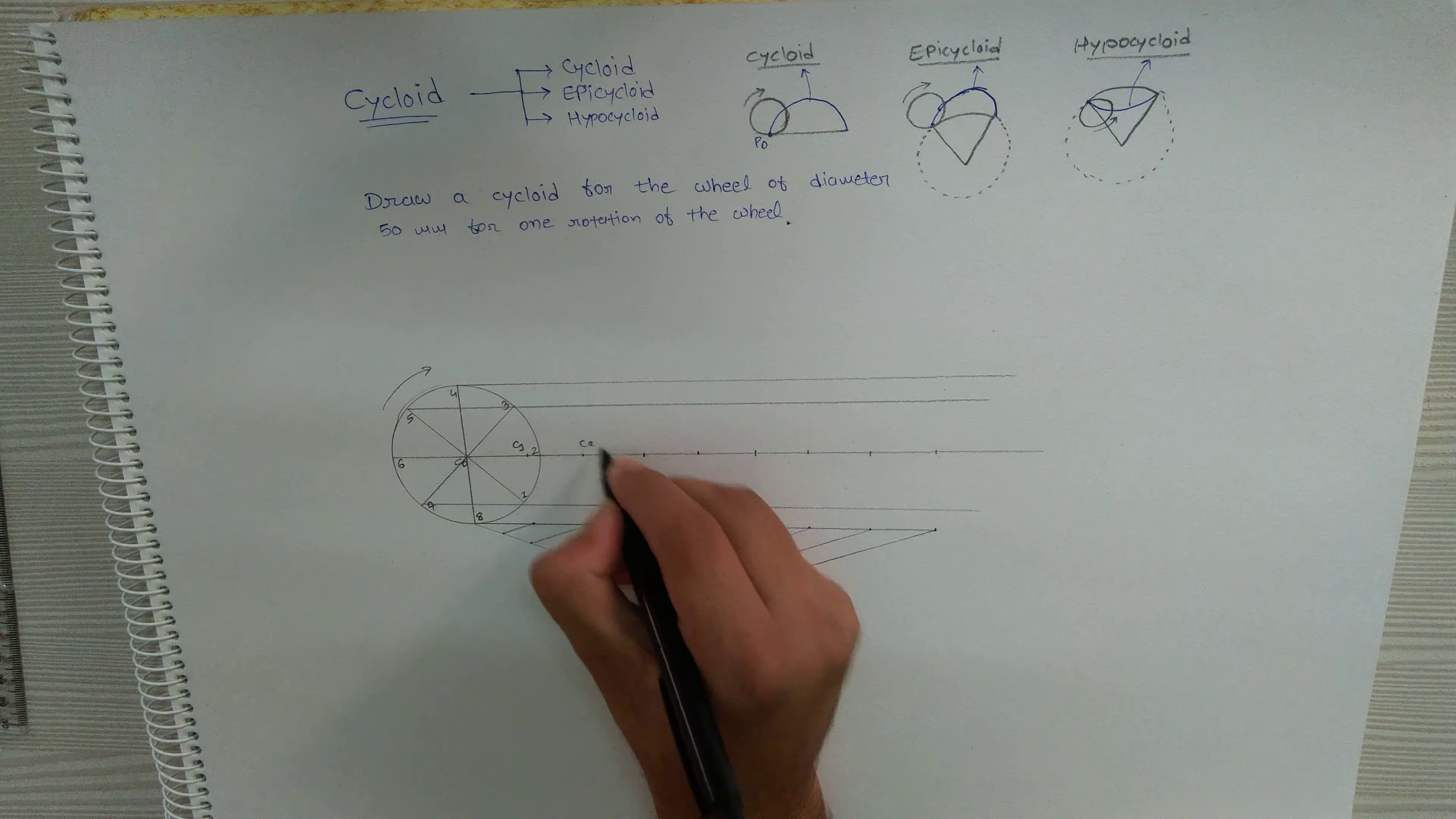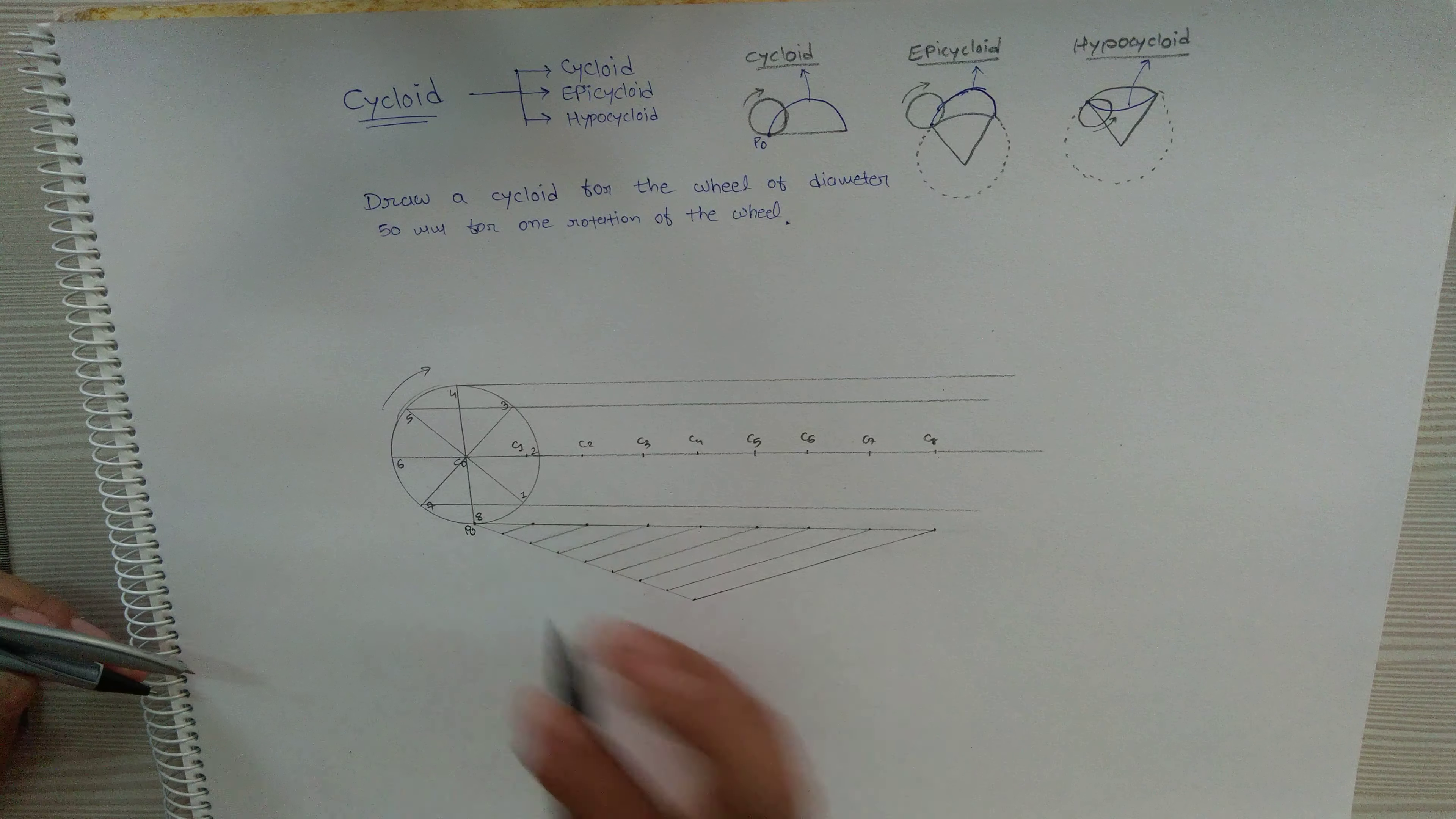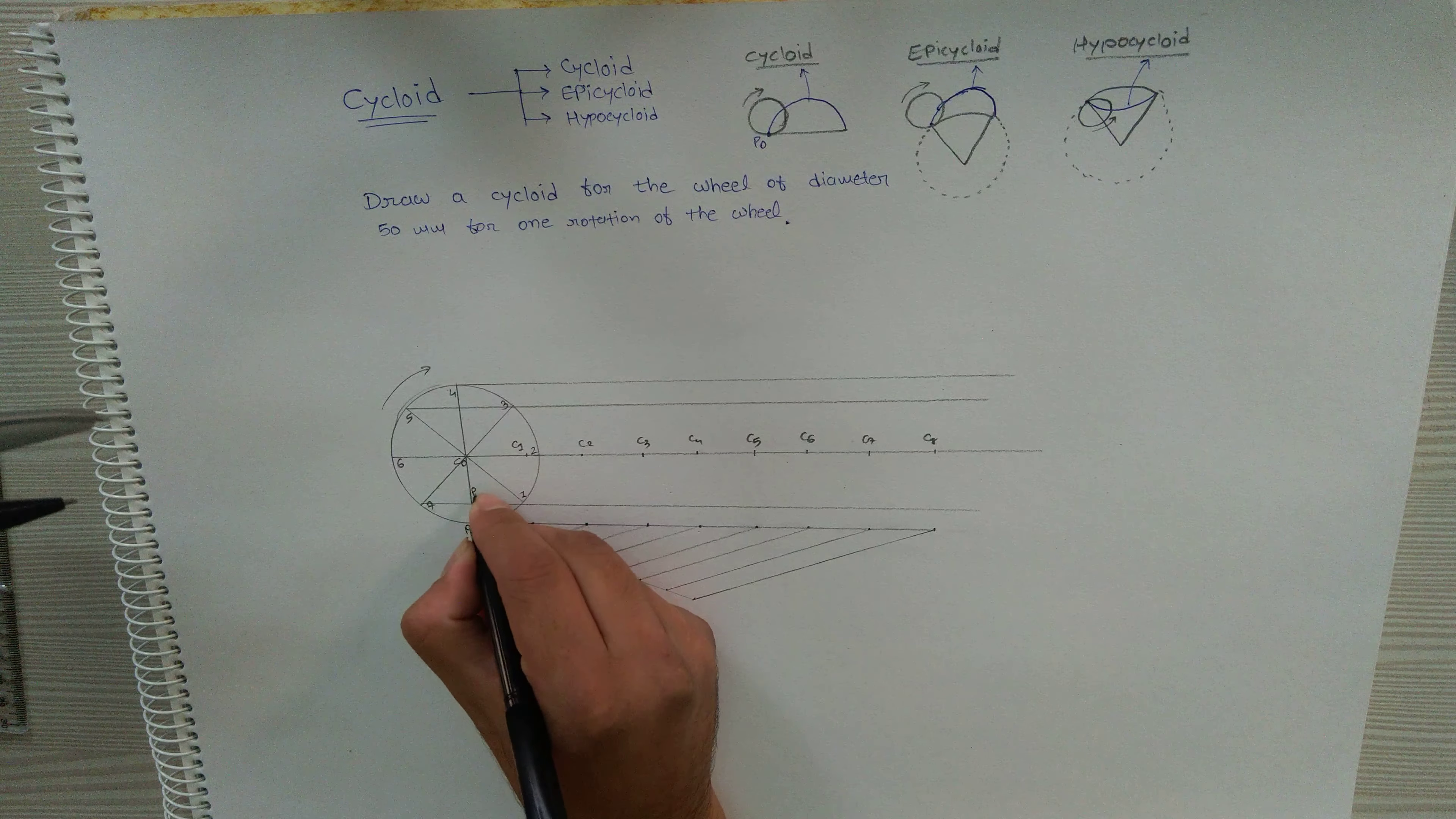Now take the radius of the wheel. The initial position of point p0 is the point of contact between the path and circle. Take this radius, put center on c1, and draw an arc on the line of 1. So here it will be p1.